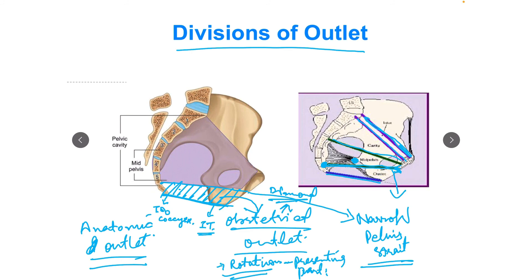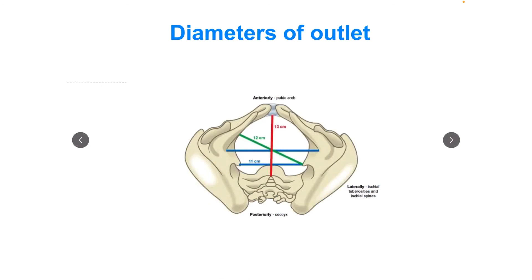Outlet का anterior-posterior diameter measure होता है from the lower border of symphysis pubis to the sacral promontory — यह होता है about 13 cm, और यही space available है for childbirth। Oblique diameter of the outlet measure होती है from the obturator foramen to the sacrospinous ligament, but there is no fixed point...